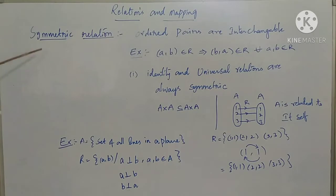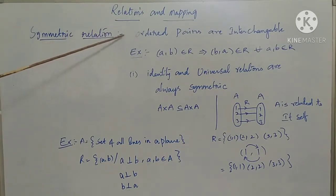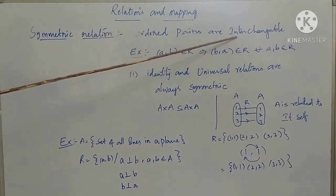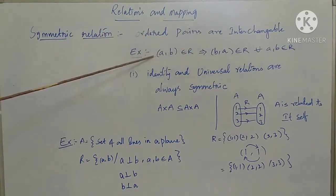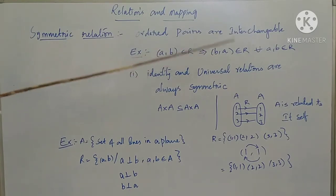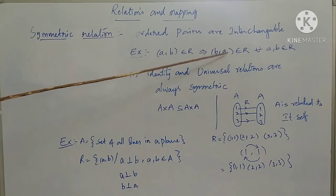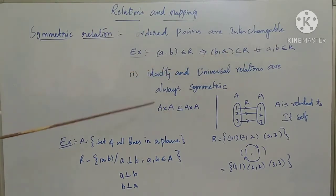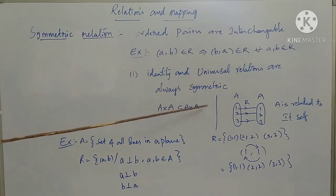The first one is symmetric relation. In this symmetric relation, ordered pairs are interchangeable. This means if an ordered pair (A, B) belongs to R, then (B, A) also belongs to R, for every A, B belonging to R. Identity and universal relations are always symmetric.